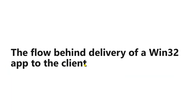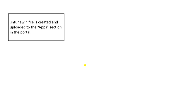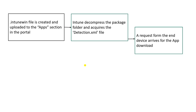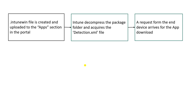Now let's understand the flow behind delivery of a Win32 app to the client. The .intunewin file is created and uploaded to the app section in the Intune portal. The next step is that Intune decompresses the package folder and acquires the detection.xml file — basically, when you upload a .intunewin file into the Intune console, Intune decompresses the package folder and acquires the detection.xml file.